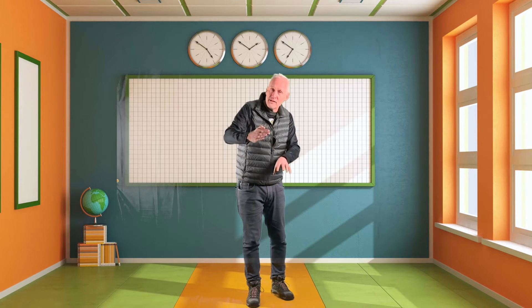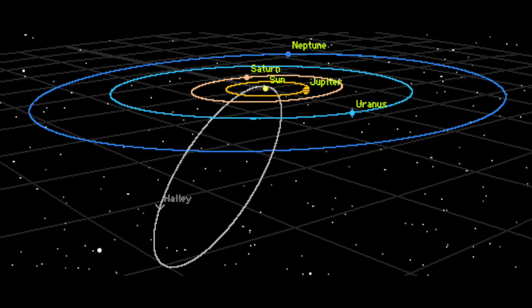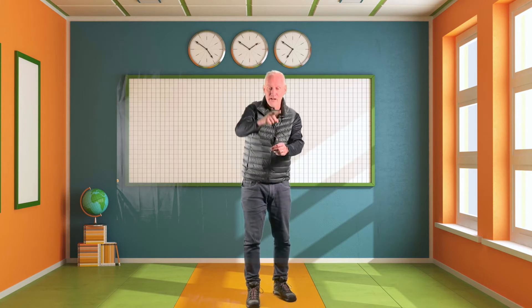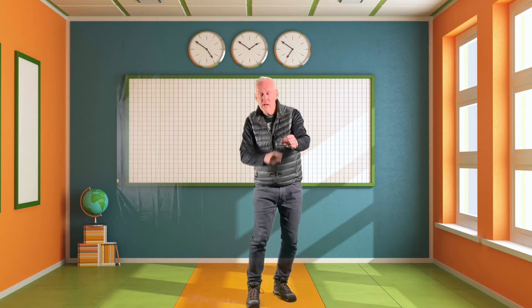The problem with the bowling ball and trampoline model is that it requires gravity to generate gravity — gravity causes the bowling ball to sink into the trampoline. But that can't be the case in the universe; the sun is not falling towards something. There are some aspects of general relativity that are very difficult to comprehend. Not only that, comets come in from every direction — from above the trampoline, from below, from all around — so it becomes very complex.